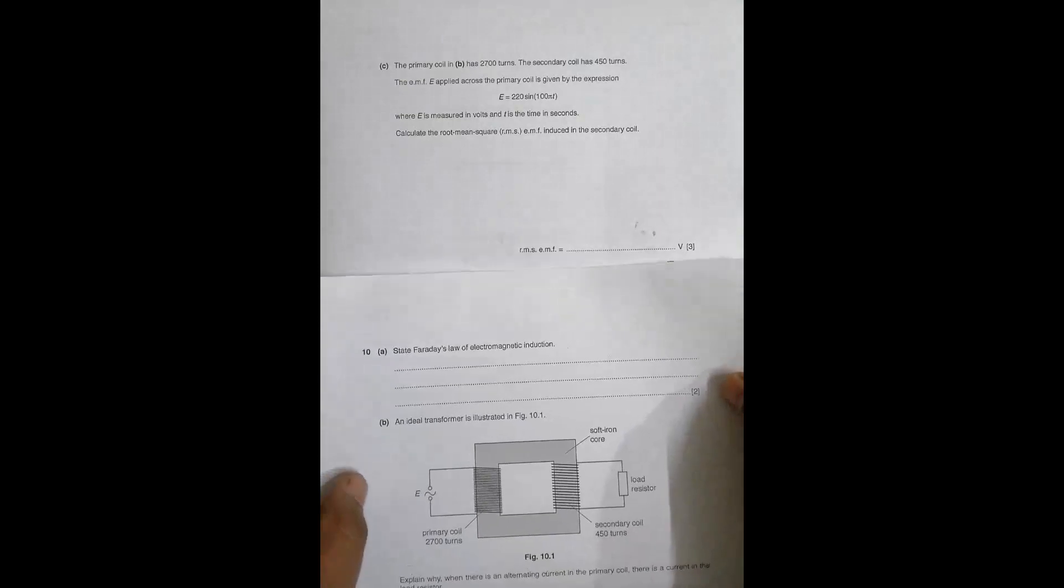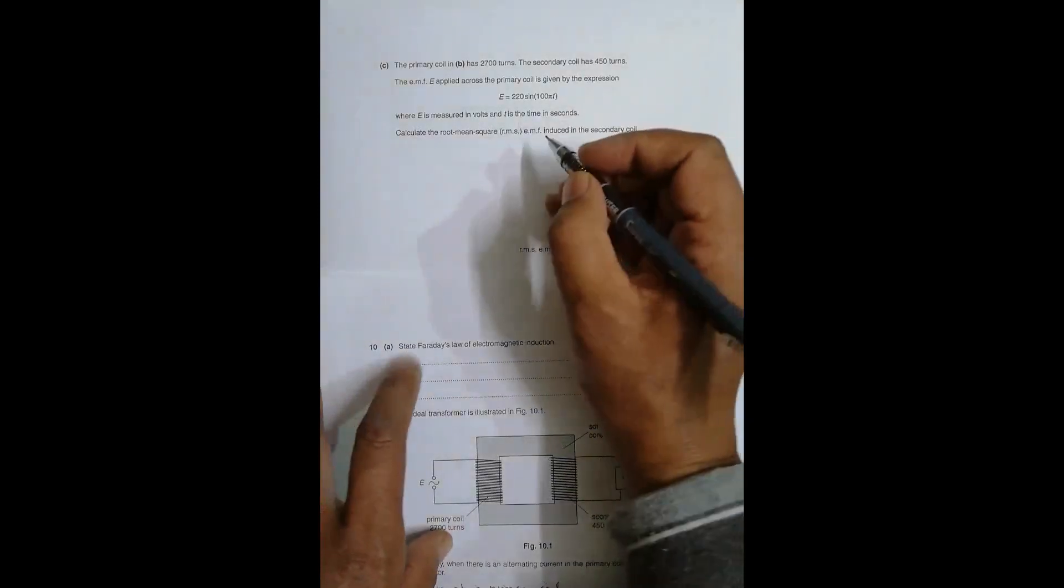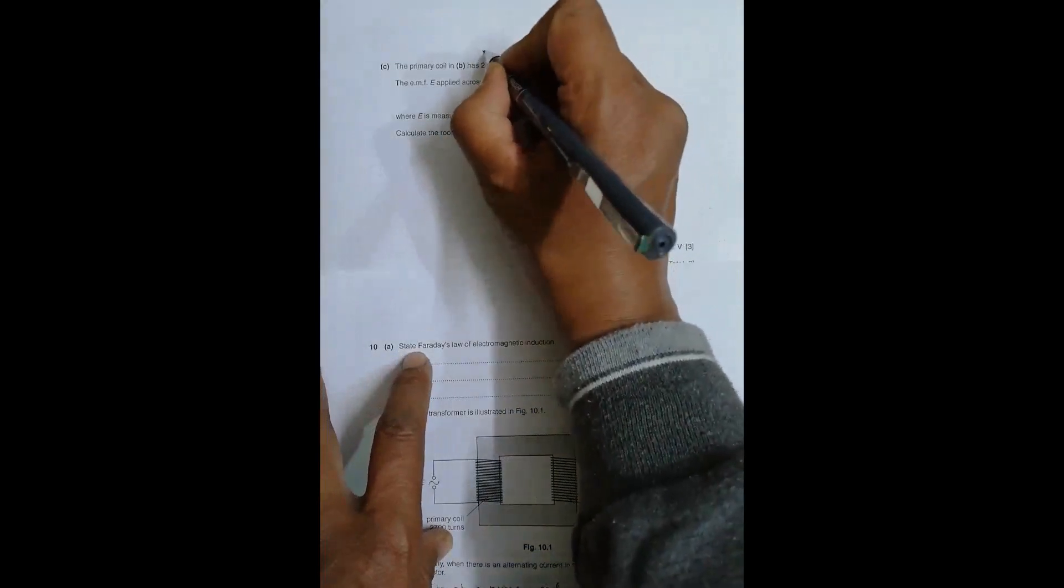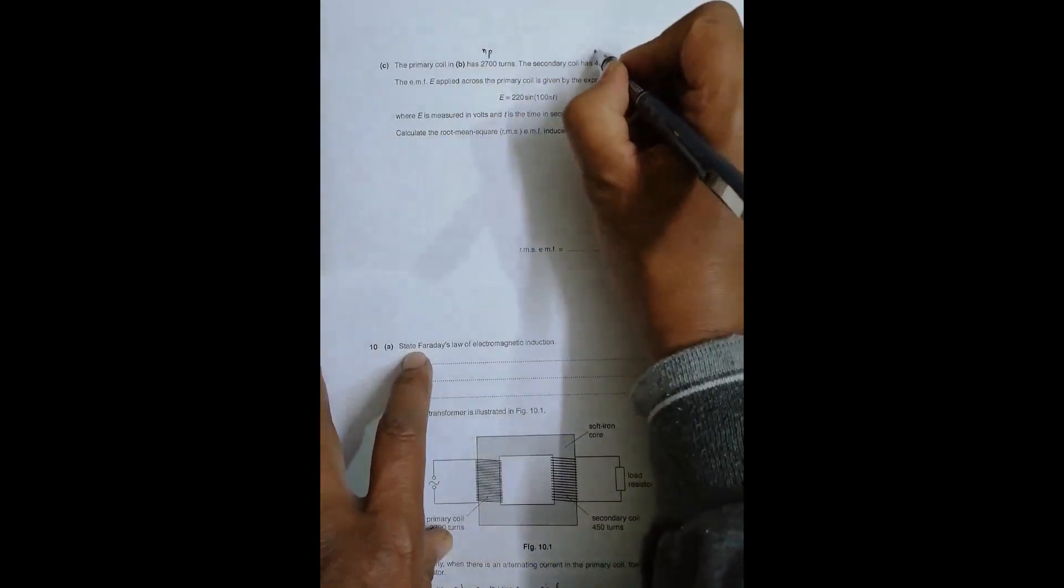The next question: the primary coil has 2700 turns, the secondary coil has 450 turns. Let me use proper symbols - this is Np and Ns.